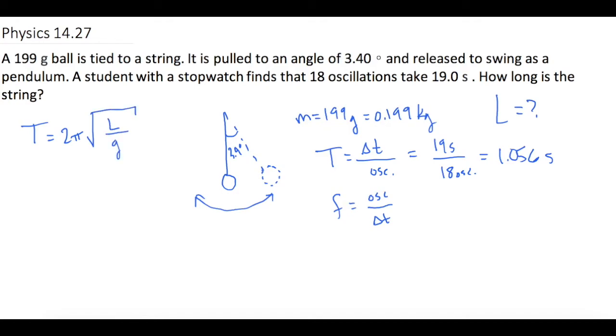So now all I have to do is solve for L and then plug my values in. Let's divide both sides of the equation by 2π. So now we have T over 2π equals square root of L over g.